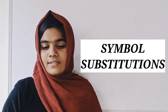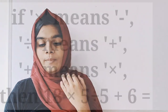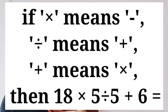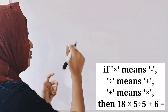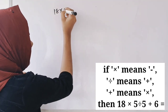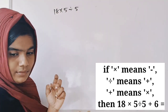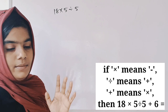In simple substitutions, we will discuss the first question. The first question is: if 'into' means minus, 'divided by' means plus, and 'plus' means into, then what is 18 into 5 divided by 5 plus 6 equal to?